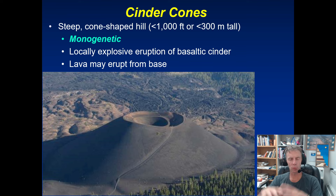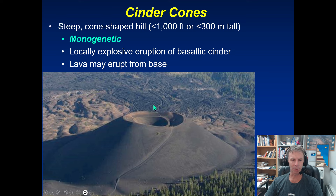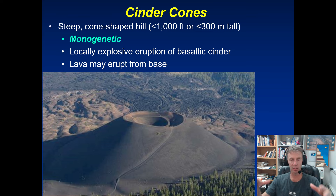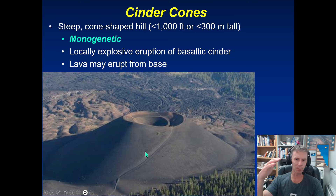The lava clots are airborne — tephra — raining down around the vent over time to form a cone. These are locally explosive. You could still watch from half a mile away or so, depending on the winds. These are very small compared to other volcano types — mainly less than 1,000 feet or 300 meters in height. They typically have a crater at the summit, and this entire mass is nothing more than the accumulation of all the airborne lava that's piled up around the vent over time — a big pile of loose rock, cinders, golf ball to marble sized rocks. If you have to hike up one, it's quite an ordeal — very steep and loose.